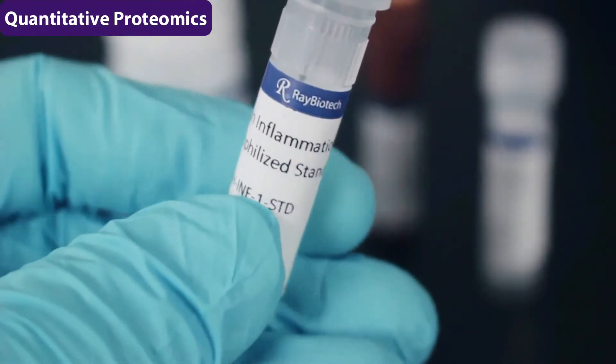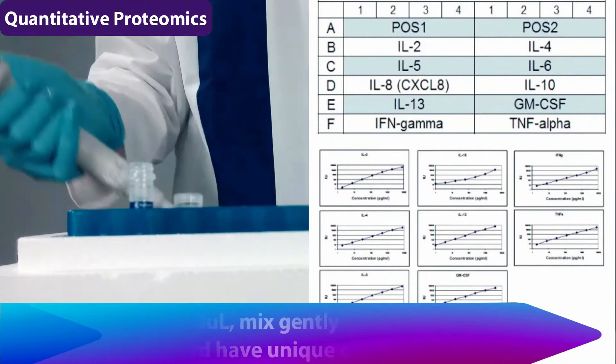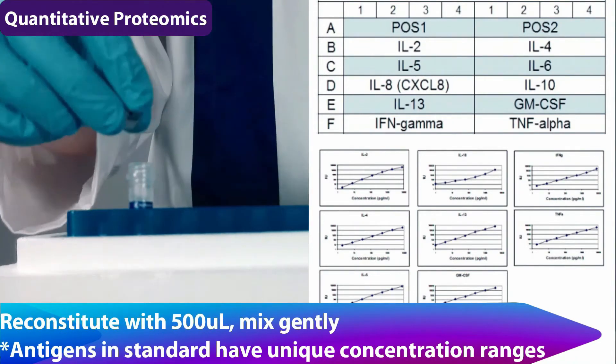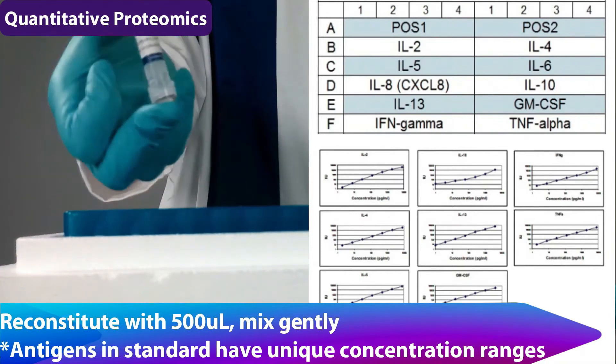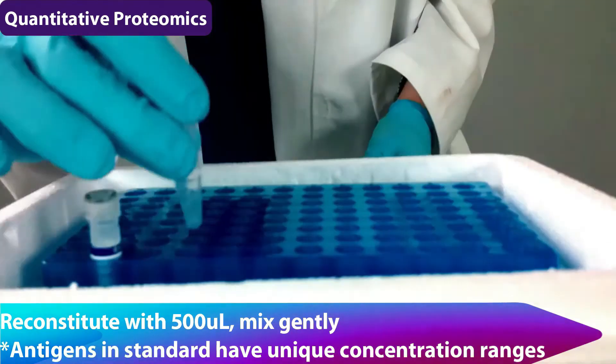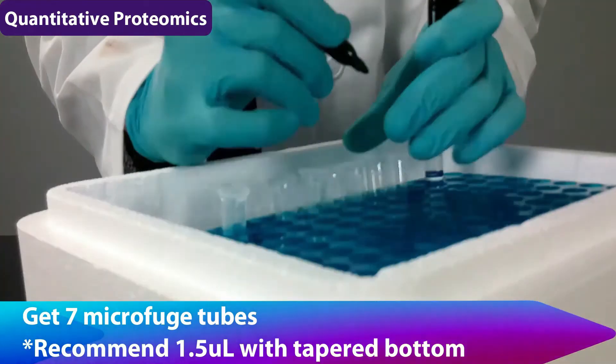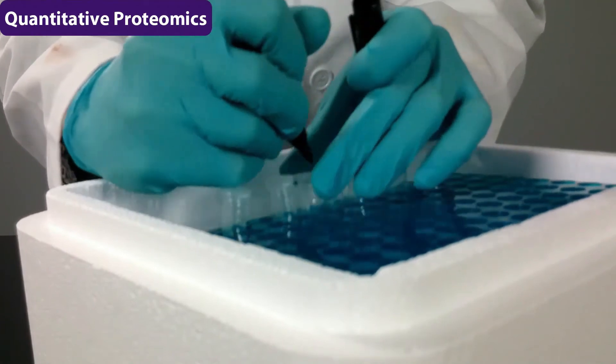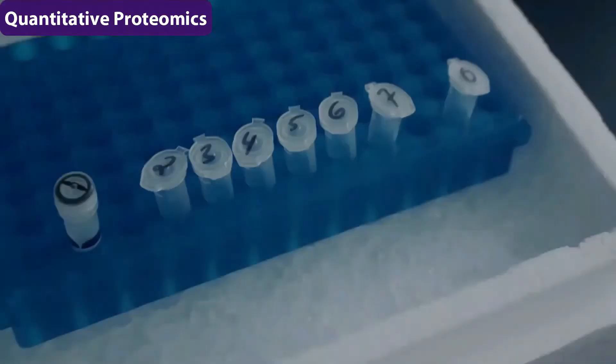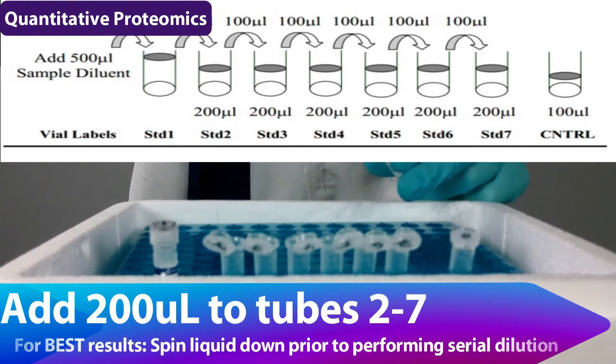The first thing you're going to do is grab your lyophilized standard with your multiple antigens in it and your sample diluent. Then reconstitute the powder with 500 microliters. Note that the antigens in the standard have unique concentration ranges and will be diluted in the same proportion for seven dilutions. Mix gently with repeated pipetting or multiple inversions. Then get seven microfuge tubes. We recommend a 1.5 microliter with a tapered bottom. Be sure to label them two through seven and then zero as your control. Note all standards and samples should be diluted and prepared on ice, which is why we have our trusty ice bucket underneath the tubes.